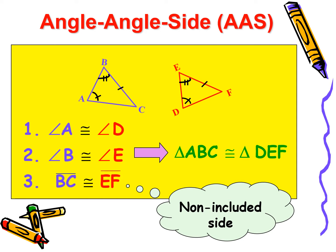Now let's move on to Angle-Angle-Side, or AAS. The first statement is about an angle: angle A is congruent to angle D. Then another angle: angle B is congruent to angle E. And the last one is a side: BC is congruent to EF. In here, it is a non-included side — a side that is not included between the angles. So we can conclude that triangle ABC is congruent to triangle DEF by AAS congruence.